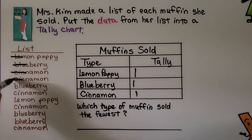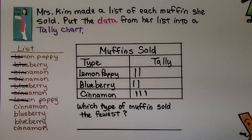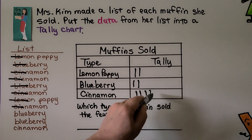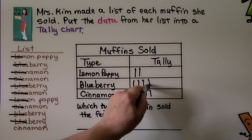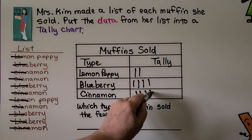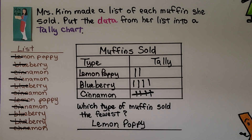We continue through the list: another cinnamon, another blueberry, another lemon poppy, another cinnamon, another blueberry, another blueberry, and another cinnamon. Because we have four tally marks for cinnamon, we cross it for the fifth. Which muffin sold the fewest? It's very easy to see in the tally chart — she only sold 2 lemon poppies. The answer is lemon poppy sold the fewest.